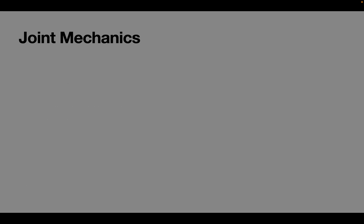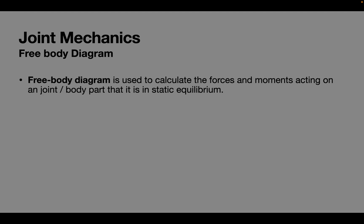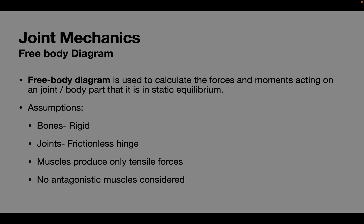Let's now understand the free body diagram of a hip joint. Free body diagram is used to calculate the forces and moments acting on a joint or body part that is in static equilibrium. To simplify the calculations we need certain assumptions: bones are rigid, joints are frictionless hinges, muscles generate tensile forces only, and we do not include the contribution of antagonistic muscles.